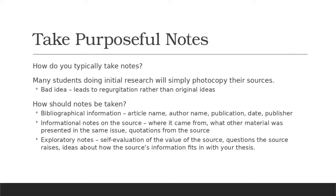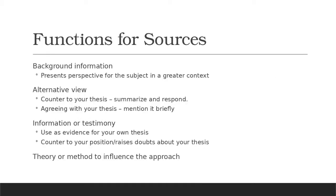As you're doing rhetorical reading, take purposeful notes. Students doing initial research often simply photocopy sources — a very bad idea that leads to regurgitation rather than original ideas. Yagelski recommends dividing your notepad into three columns: Column one is your bibliographic information — article name, author name, publication, date, publisher — everything needed to create a works cited listing. The middle column is informational notes on the source — where it came from, other materials in the same issue, quotations from the source. The third column is your exploratory notes — your self-evaluation of the value of the source, questions the source raised, and ideas about how the source's information fits with your thesis.